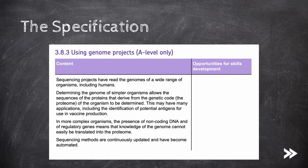Then we should know that determining the genome of simpler organisms can be used to determine the proteome of the organism, and why this can be useful — for example, the identification of potential antigens for use in vaccine production. We will also cover how, in more complex organisms, the presence of non-coding DNA and of regulatory genes means that knowledge of the genome cannot easily be translated into the proteome. And finally, we should know that sequencing methods are continuously being updated and have become automated.